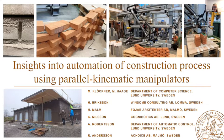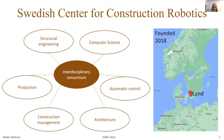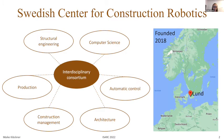I realized what amount of historic ground knowledge is needed to build houses and how many still manually performed working steps are needed. This fascinating manual work, in combination with applied robotics and increasing sustainability effects, drove us to combine all this into our Swedish Center for Construction Robotics. The center was founded in 2018 and is an interdisciplinary consortium of computer science, automatic control, architecture, construction management, production, and structural engineering, located in Lund, South Sweden.